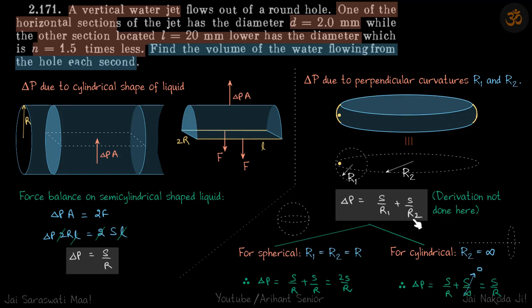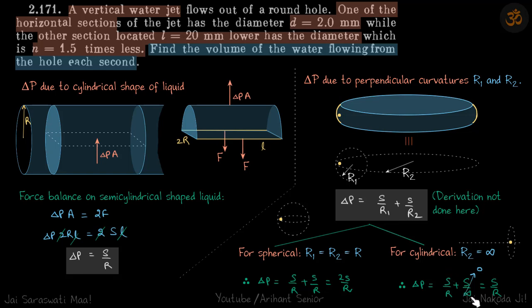Just know that if you have two perpendicular radii of curvatures r1 and r2, the excess pressure at the point inside is ΔP = S/r1 + S/r2. For a spherical shape, r1 = r2 = r, so ΔP = S/r + S/r = 2S/r, which is our well-known result. For a cylindrical shape, one radius is r and the other is infinity, so ΔP = S/r + S/∞ = S/r, consistent with what we derived.